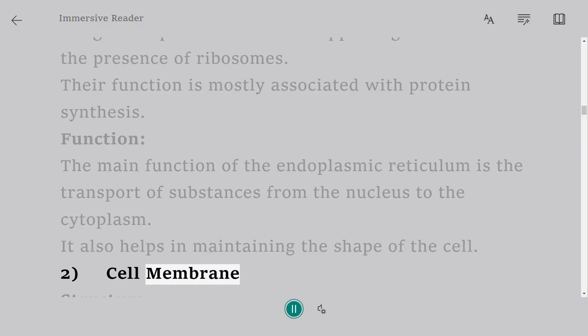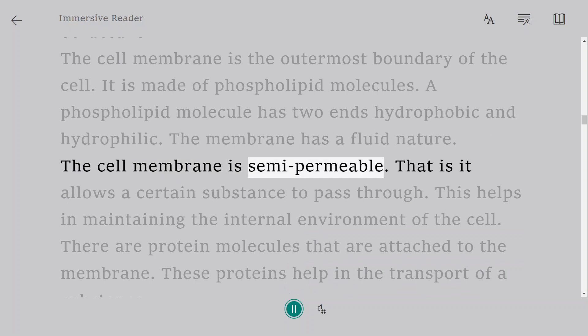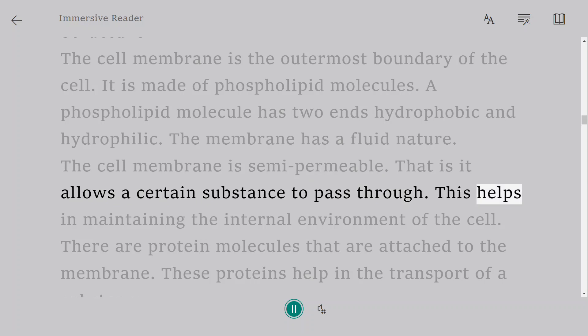2. Cell membrane. Structure: The cell membrane is the outermost boundary of the cell. It is made of phospholipid molecules. A phospholipid molecule has two ends hydrophobic and hydrophilic. The membrane has a fluid nature. The cell membrane is semi-permeable. That is it allows a certain substance to pass through. This helps in maintaining the internal environment of the cell.